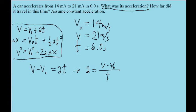So v is 21 meters per second, v-naught is 14 meters per second, t is 6.0 seconds. When you plug this into your calculator, you find an acceleration of 1.1666 repeating. You can round this to 1.2 meters per second squared. So that is the acceleration that the problem asks for.